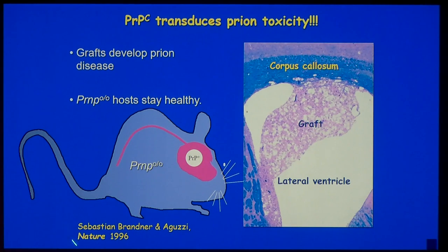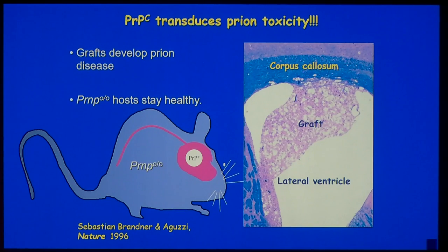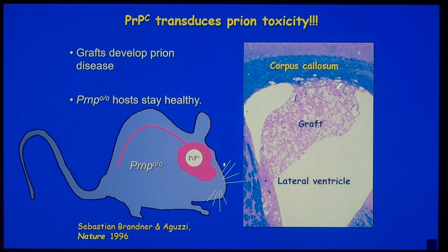I want to remind you of an experiment we did 30 years ago with Sebastian Brandner, who was my first post-doc. What Sebastian did was to take a PRP knockout mouse, which cannot be infected with prions, and transplant a piece of brain that expresses the normal prion protein, then infect this. What he found was spongiform encephalopathy — huge vacuoles that blow up in the neural tissue. However, the surroundings were hardly affected at all, although the prions had happily transmigrated into the surroundings. This already suggested that it is really the normal prion protein — a GPI-linked protein on the surface of the neuron — that is necessary to transduce the toxicity.